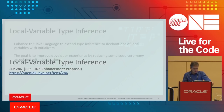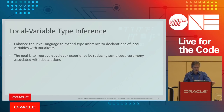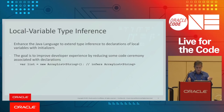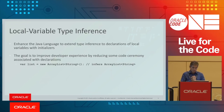Local variable type inference enhances the Java language to extend type inference to declarations of local variables with initializers. There are some other cases where var can be used, but this is the main case. The goal is to improve developer experience by reducing the source code ceremony associated with declarations.